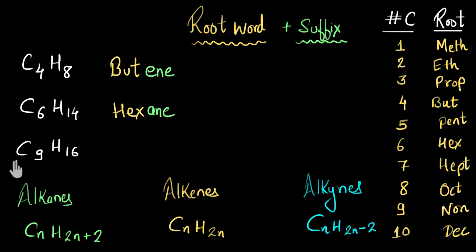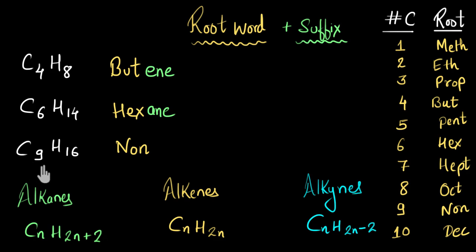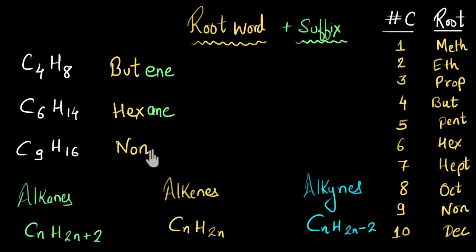For the next molecule with nine carbon atoms, the root word is 'non.' Checking the hydrogen count: nine times two is 18, but the hydrogen count is two less than 18, which means alkyne. For alkynes we use the suffix '-ine,' so the name of this compound is 'nonyne.'